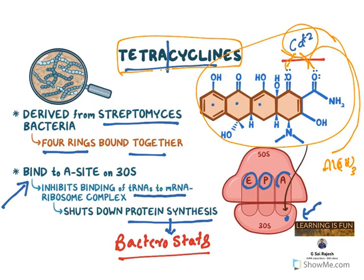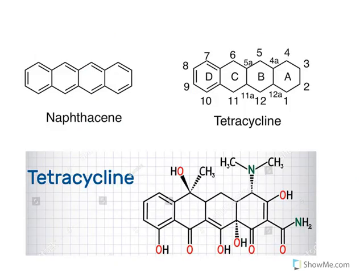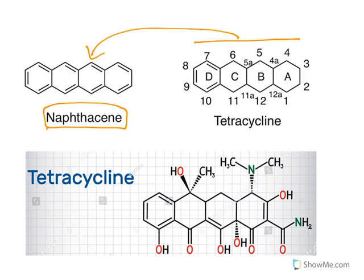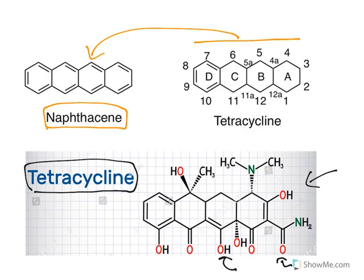Tetracyclines are made up of four fused rings and are a derivative of the ring system called naphthacene, also known as tetracene. The basic tetracycline ring with all its functional groups is built on this scaffold, and we will see the functional groups in detail when we look at nomenclature.